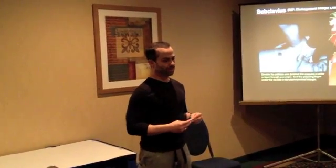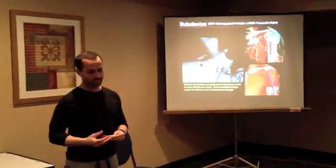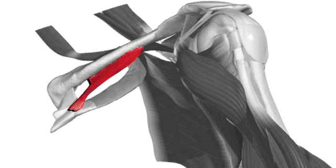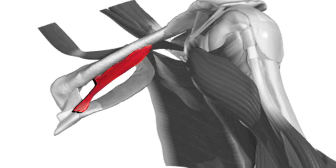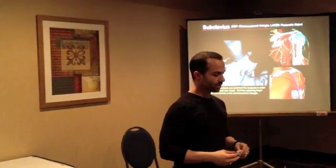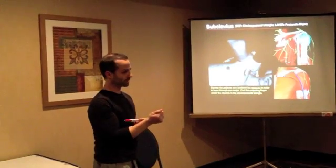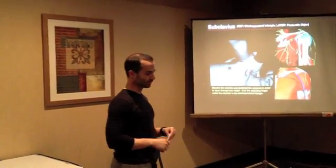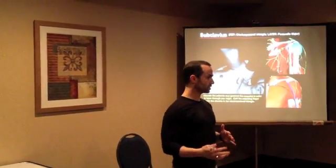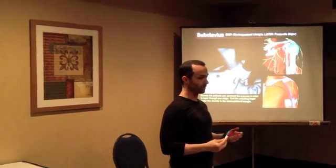Now when you're treating someone — let's say the subclavius is non-functional — you're getting a posterior rotation of the clavicle right away upon initiating your abduction movement. There could be the problem that the subclavius is not doing its job; it's not holding that clavicle down until you get about 90 degrees. That could be a problem with neural drive, or it could be a problem with fibrosis leading to decreased functionality of that muscle.